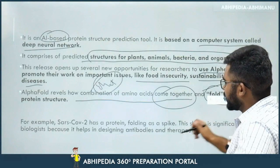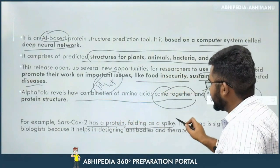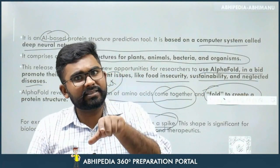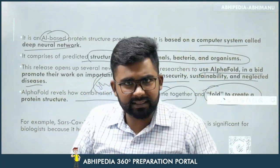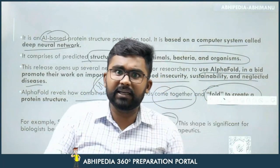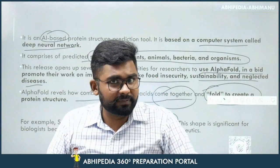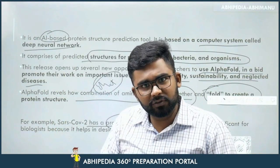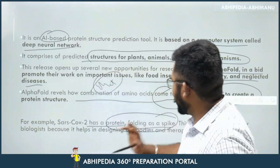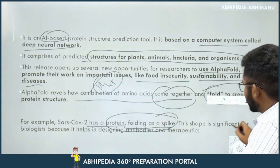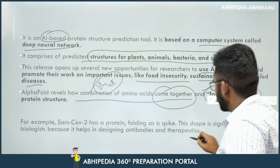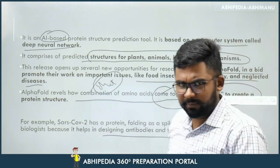For example, with SARS-CoV-2, we needed to understand how the virus attaches to the body — where and when it attaches. When making vaccines, we need to know the protein structure as well. In that context, after the pandemic, AlphaFold became very relevant and important. This protein shape is significant for biologists because it helps in designing antibodies and therapeutics.